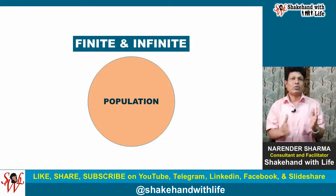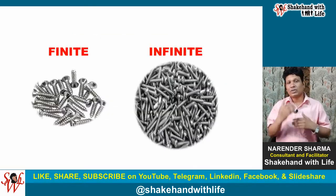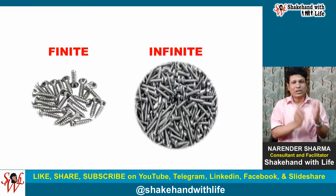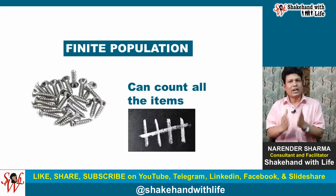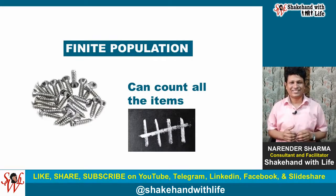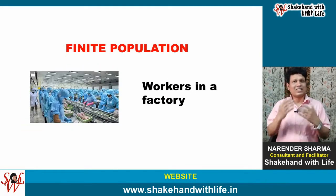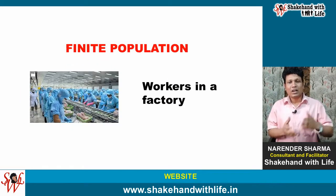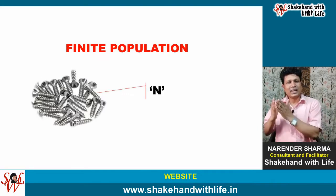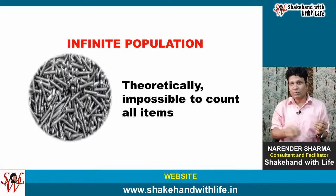Now, let's understand finite and infinite Population. The Population or Universe can be finite or infinite. The Population is finite if we can enumerate or count all the items in the Population. For example, the number of people living in a city, the number of workers in a factory, or the number of calls received in an hour. Capital N is generally used to indicate the number of items in the Population.